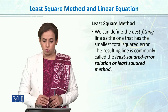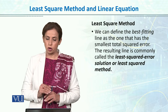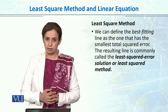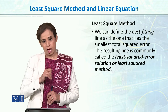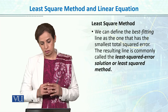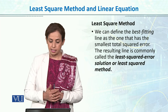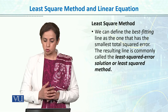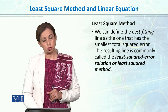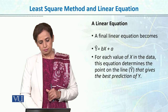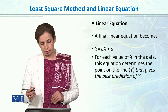We can define the best fitting line as the one that has the smallest total squared error. The line of best fit is the one where we define the distance as the smallest. The resulting line is commonly called the least squared error solution, or least squares method.